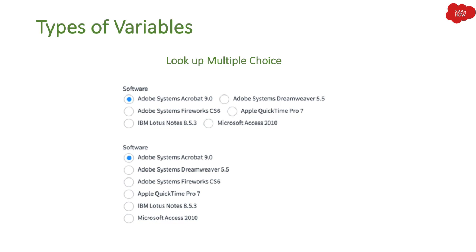Then we have Lookup Multiple Choice. Whenever you hear 'lookup,' it means it will first look up records in a particular table and then display them to the user. If you have records in a table and want users to select from them, you can use Lookup Multiple Choice. These are displayed like radio buttons — whenever you hear 'multiple choice variable' in Service Catalog, they appear as radio buttons.